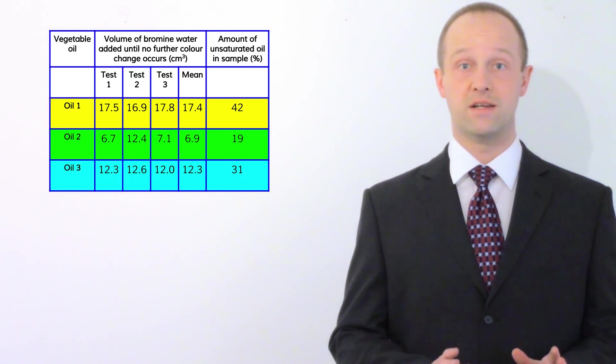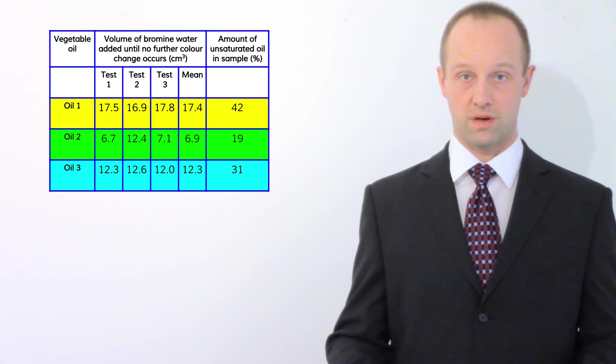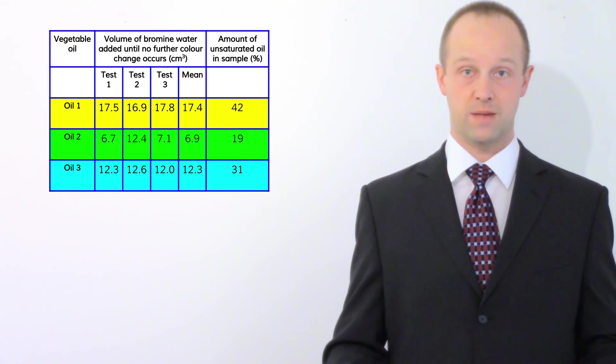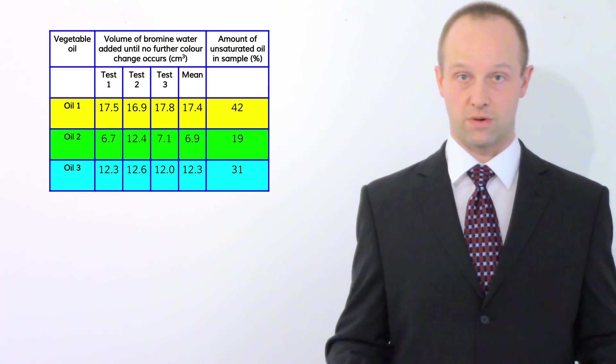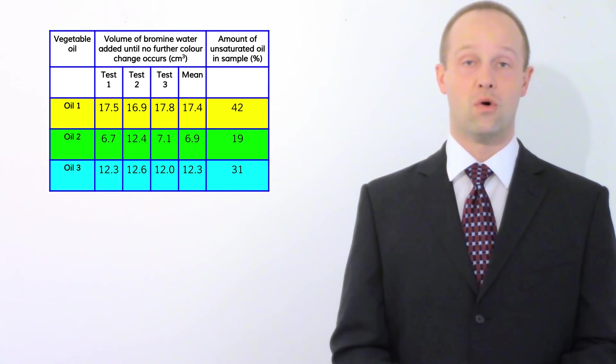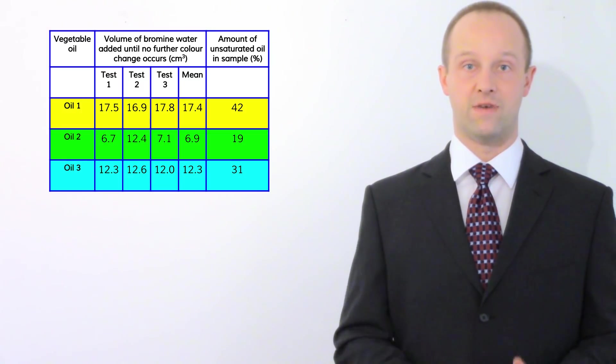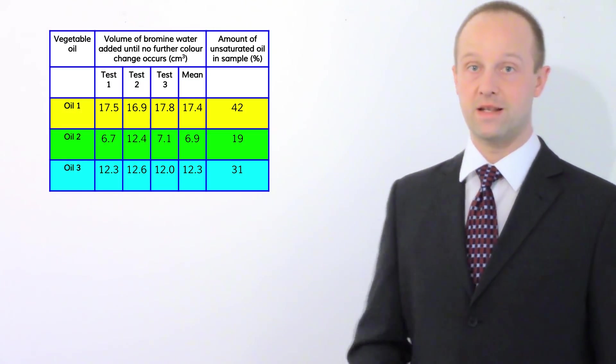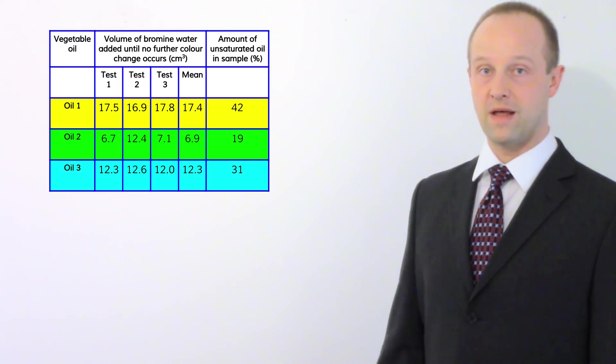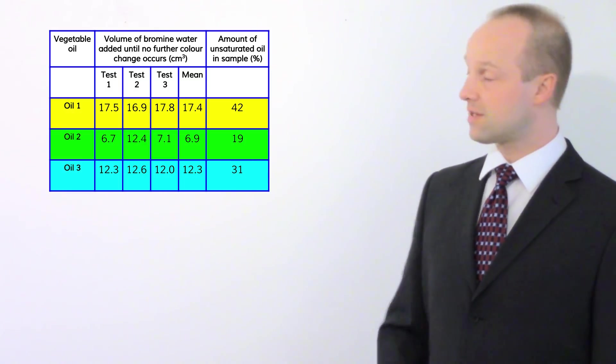Now let's just look at the first of these oils on that first row. Some sort of test has been done, something to do with bromine water. Again doesn't matter exactly what that test is. There has been a test which has been done three times to this oil and then a mean's been taken. Now you need to make sure that you know how to calculate means. Expect that to come up somewhere on one of the science papers. Calculating a mean is really easy though. All you do is take however many results you've got, you add them all together and then divide by how many there were.